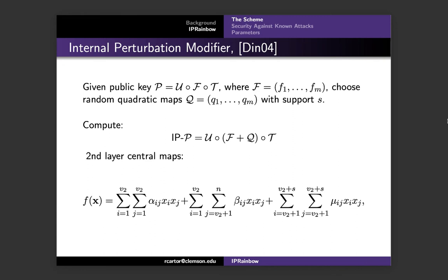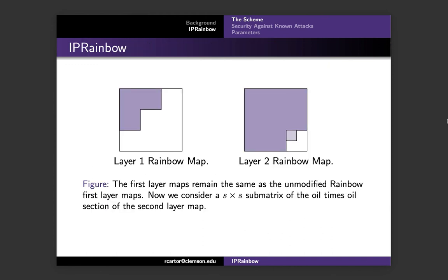The reason this is an interesting modifier to consider is that if you're given an unmodified rainbow public key, you know that for any x in Fq to the n such that t of x is in O2, then p of x, so the public key evaluated at x, is going to be equal to zero. And we use that fact when setting up our system of equations in the simple attack. Now, given the IP modifier, the O2 space is not a subspace of the kernel. In fact, an O2 vector is in the kernel of q with probability approximately one over q to the s. This is a visual representation of what the IP rainbow maps would look like, the matrix representation. So once again, we see that the white would represent zero coordinates and that the purple will represent non-zero coordinates.